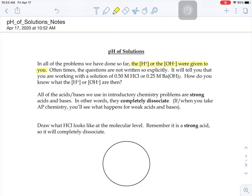Straight up, it told you here is the H+ concentration or here is the OH- concentration. But a lot of times the questions are not written so explicitly. Those molarities are not just straight up given to you. It'll tell you, for example, that you're working with a 0.5 molar solution of hydrochloric acid or a 0.25 molar solution of barium hydroxide. So how do you know what the H+ or OH- concentrations are then?